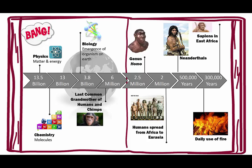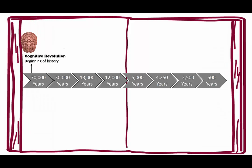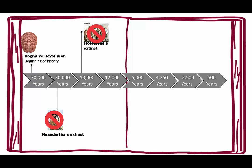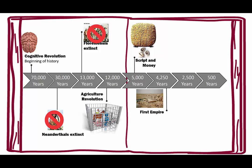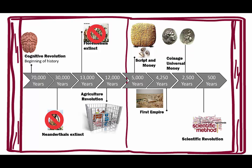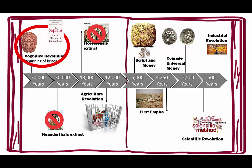That's the background he sets. He then moves to 70,000 years ago when we had the cognitive revolution and the beginning of history. 30,000 years ago the Neanderthals became extinct. 13,000 years ago all other genus of Homo became extinct. 12,000 years ago we had the agricultural revolution. 5,000 years ago we had the beginning of script and money. 4,250 years ago we had the first empire. 2,500 years ago we had coinage of universal money. 500 years ago we had the scientific revolution, and about 200 years ago we had the industrial revolution. This is how his book breaks down, and the first part — about the cognitive revolution — is what this video will be covering.